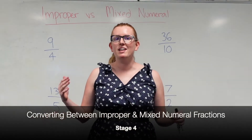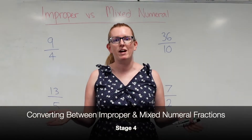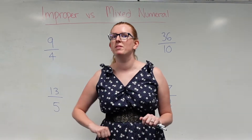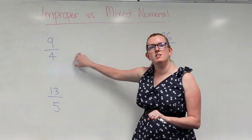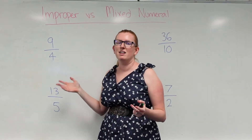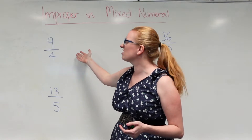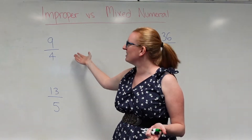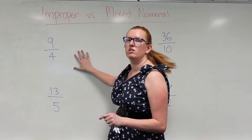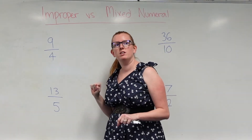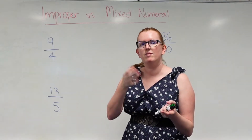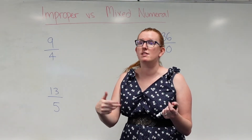Today I want to look at improper versus mixed numeral fractions. They're two different ways to represent the same information. An improper fraction is when the number on top is bigger than the number on the bottom — it just looks wrong because the numerator is too big. We're going to convert it into a mixed numeral fraction, which tells you how many whole numbers you have and then a proper fraction on the side.